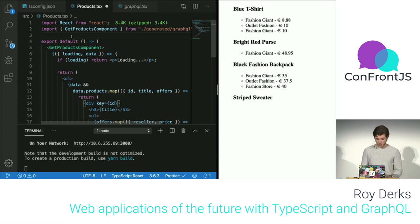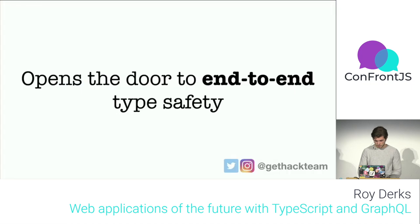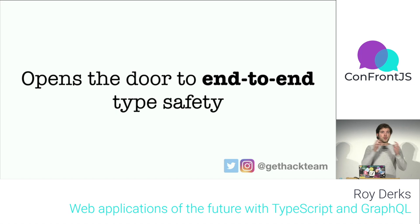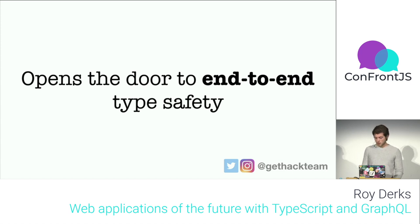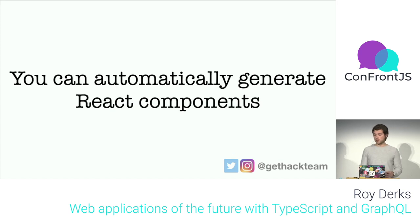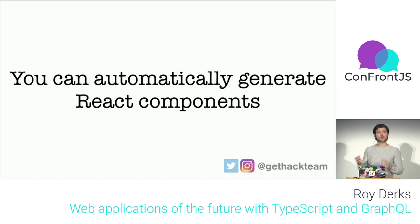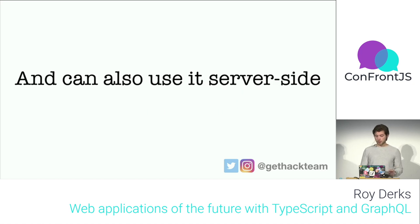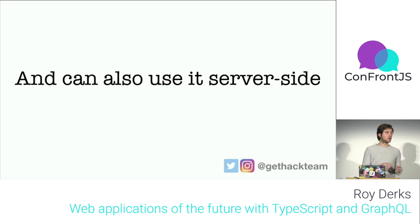This really opens the door to end-to-end type safety. With your GraphQL schema as the source of truth, you can use it to feed UI applications, other APIs, or even link your database to it. You can automatically generate React components, Angular components, or Stencil components. And you can use it server-side too — I create GraphQL servers with TypeScript and it's really convenient not having to rewrite types every time.